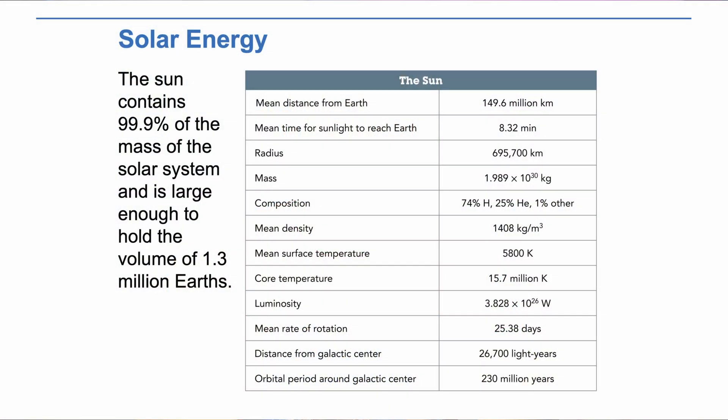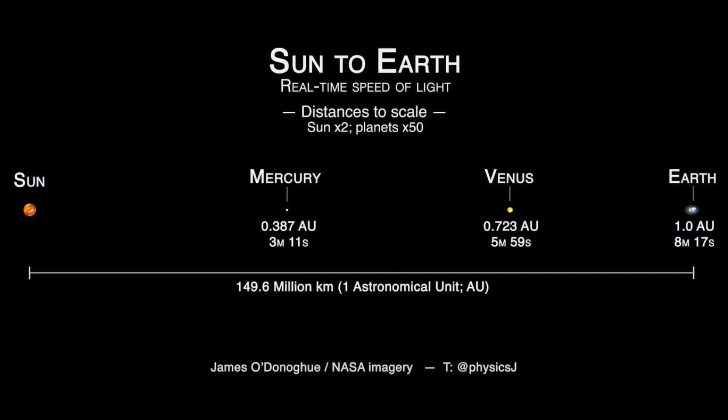Let's start with some of the raw stats that describe some of the major characteristics of the Sun, shown here in this table from your text. Check the average distance of our star from Earth, about 150 million kilometers. We use our distance from the Sun to compare the distances to other far objects in the solar system. To keep things simple, we call this distance one astronomical unit, written as one AU.